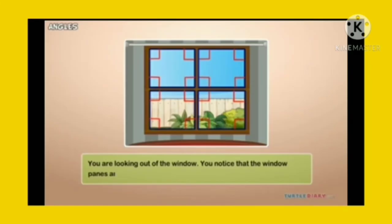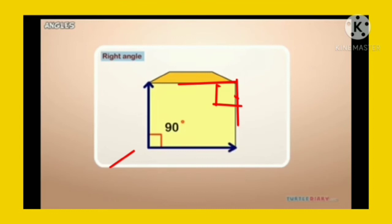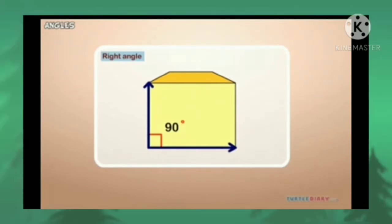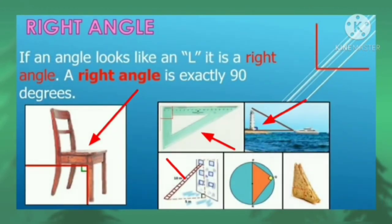We can see the examples. In windows, we can observe the right angles. And edges of a box, we can observe the right angle. And edges of books also we can observe. In all these figures, we can see the right angle formation.